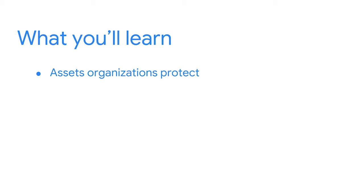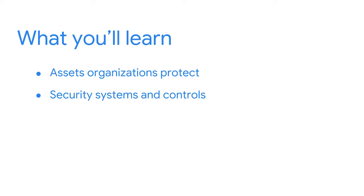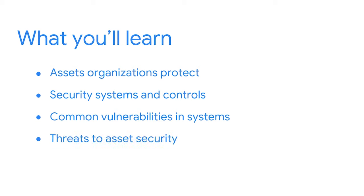In this course, you'll learn about each of these in detail. First, you'll be introduced to the world of asset security. You'll learn about the variety of assets that organizations protect and how these factor into a company's overall approach to security. Then you'll begin exploring the security systems and controls that teams use to proactively protect people and their information. All systems have weaknesses that can be improved upon. When those weaknesses are neglected or ignored, they can lead to serious problems. You'll focus on common vulnerabilities in systems and how security teams stay ahead of potential problems. Finally, you'll learn about the threats to asset security and the threat modeling process that security teams use to stay one step ahead of potential attacks.